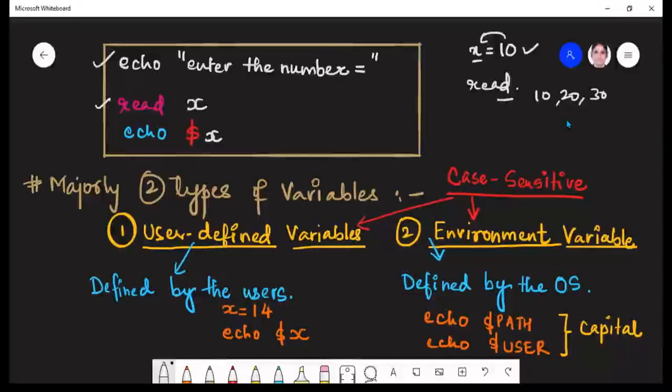Now majorly we have two types of variables in shell script. First is user defined variables. And these are defined by the users. Like we have done in the previous example, you can simply give some value to a variable and you can display its result. So whatever value you will be giving, it will be giving you the output accordingly.